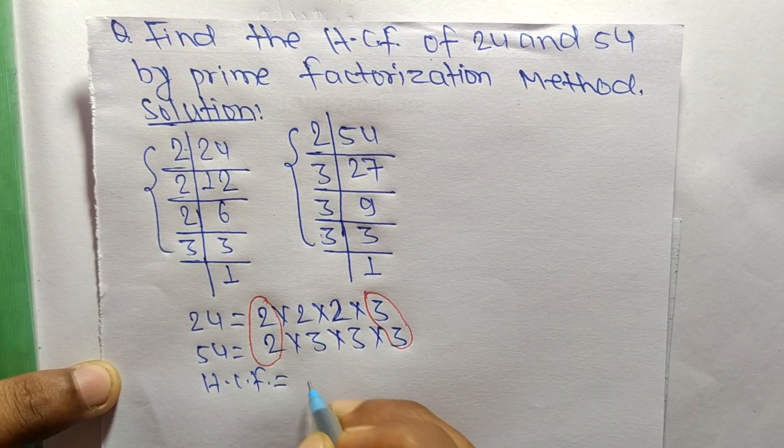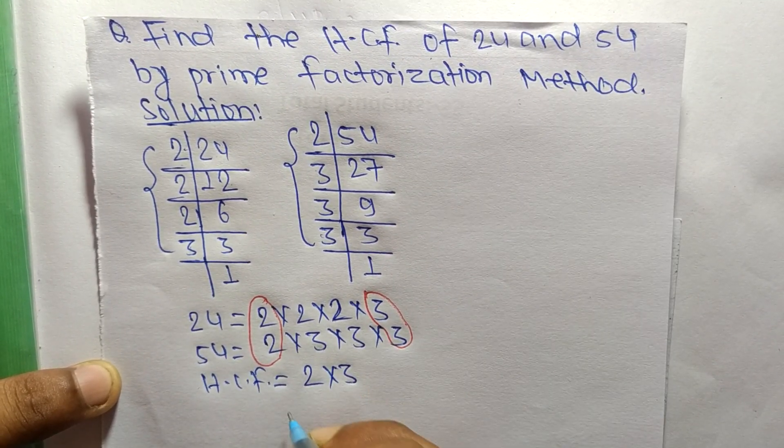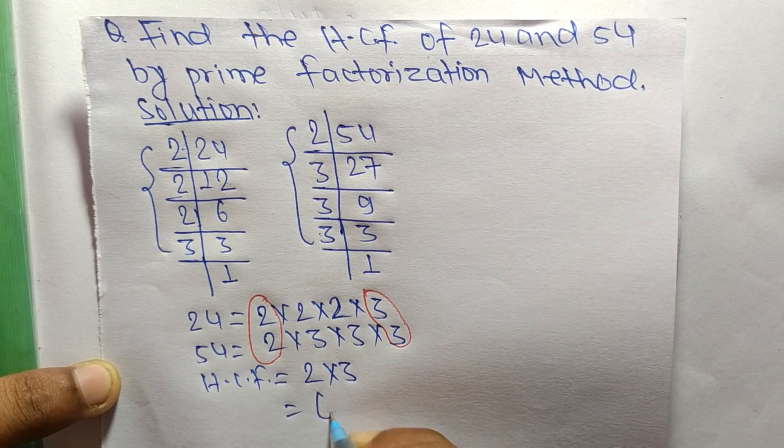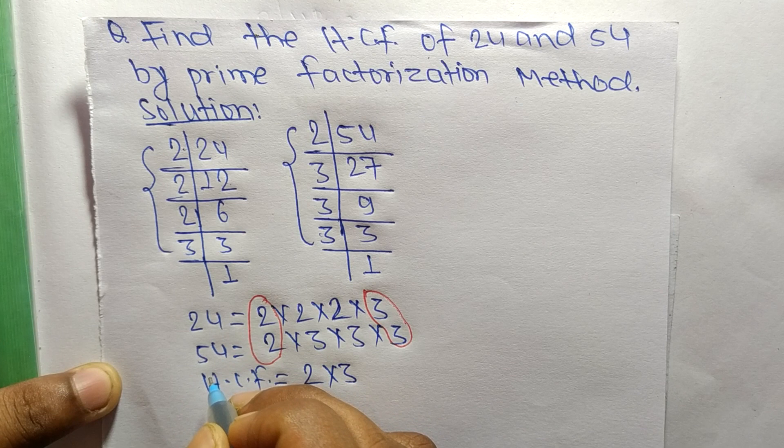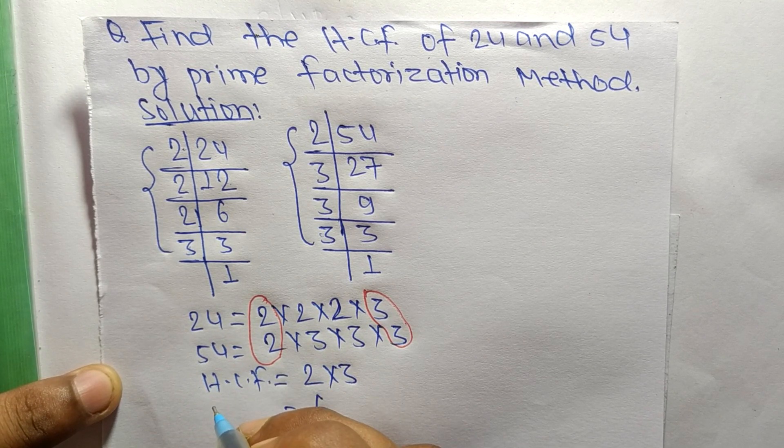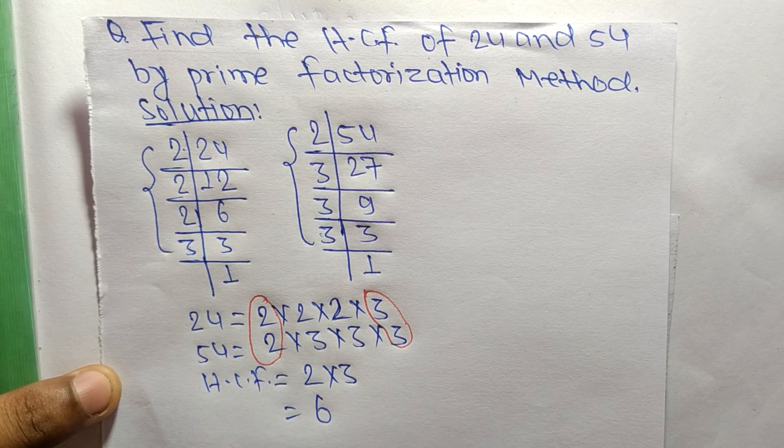So 2 times 3 means it is 6. So 6 is the HCF of 24 and 54. So this much for today and thanks for watching.